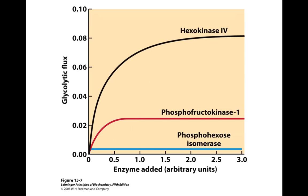Hexokinase activity allows the activation of glucose. When we increase the amount of hexokinase on this axis, we see lots of glycolysis on this axis. Phosphofructokinase 1, when its activity increases, enables the catabolism of activated glucose via glycolysis. This particular figure is looking at liver extract of rats.